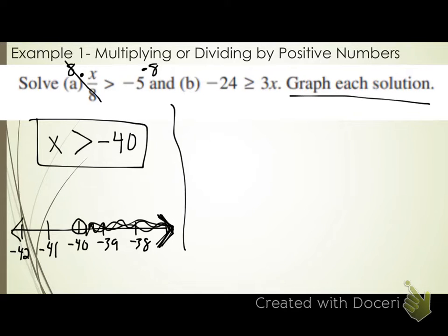A student asks about which way to shade when graphing. The key is to read it from the variable standpoint. If the variable is greater than a number, shade to the right. If less than, shade to the left. The 'arrow direction' trick only works if the variable is on the left side. If your variable is on the right, you cannot follow that rule.